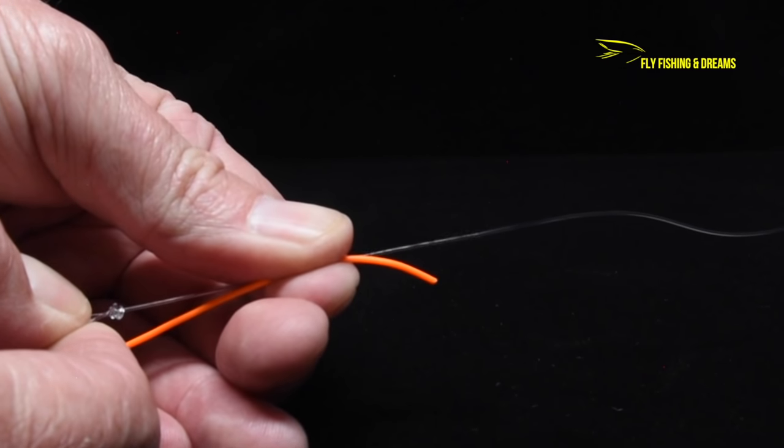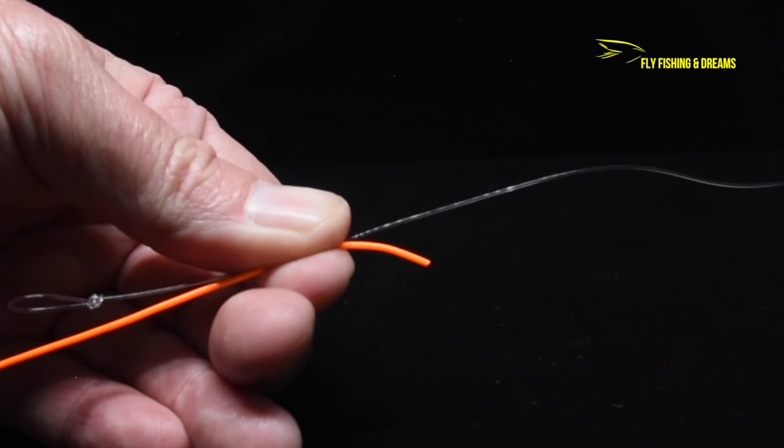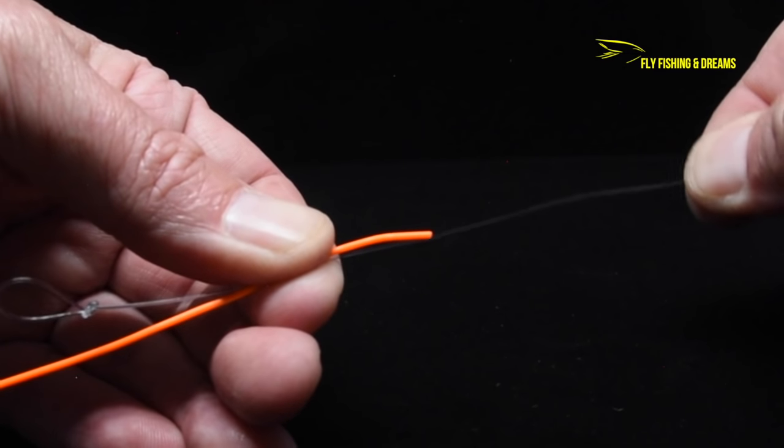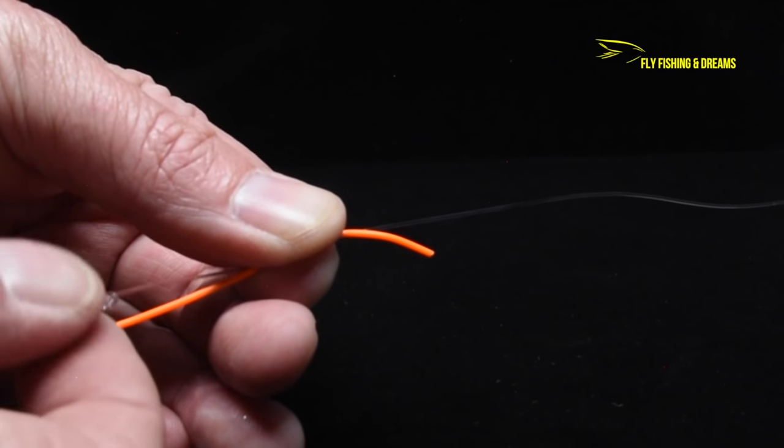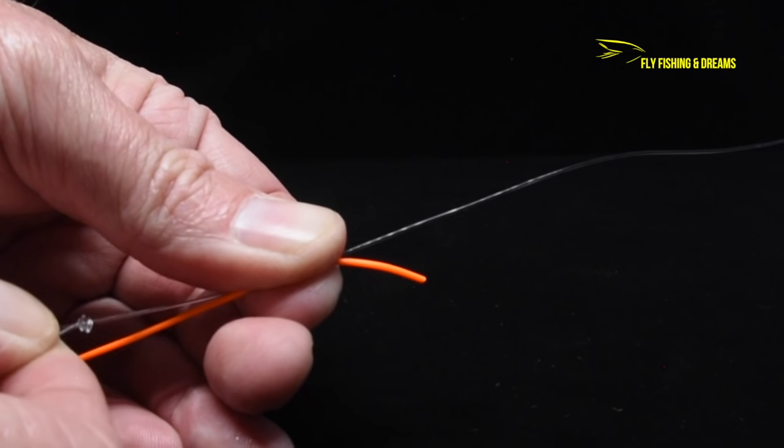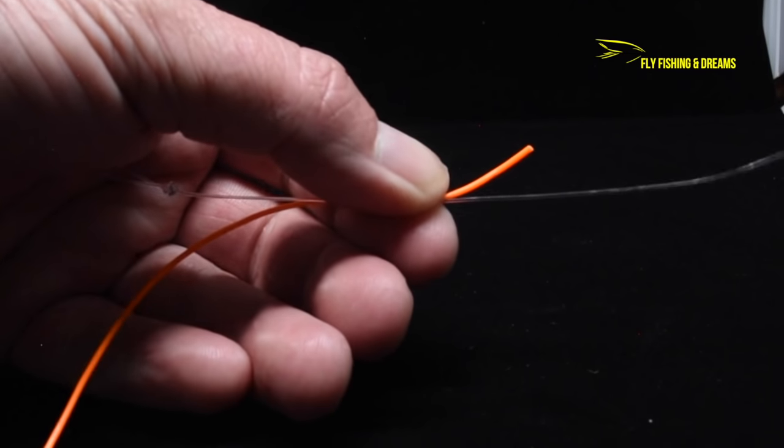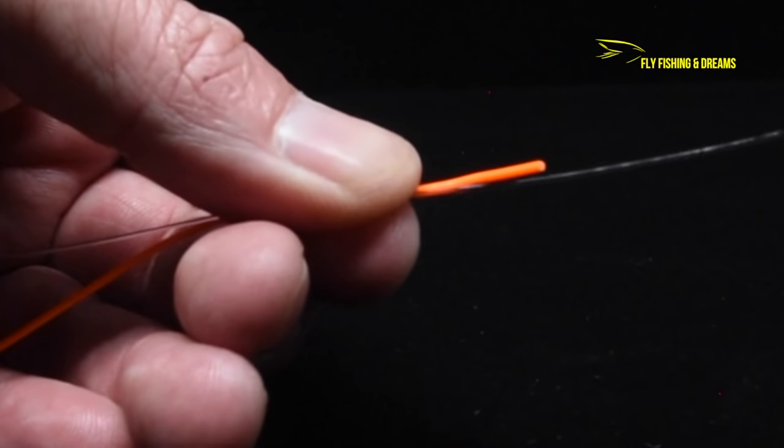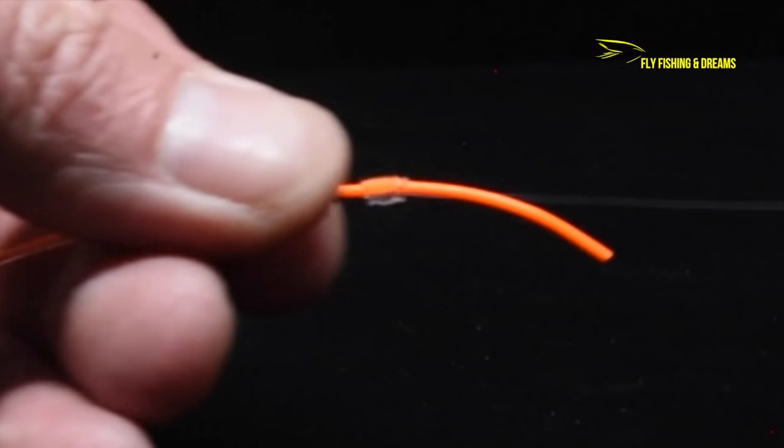While holding the knot, use your right hand to tug gently on the skinny end and then the fat end. Continue with the gentle tugs back and forth while rolling the knot between the fingers of your left hand. This helps keep the knot clean and straight. You will feel the knot tighten between your fingers.